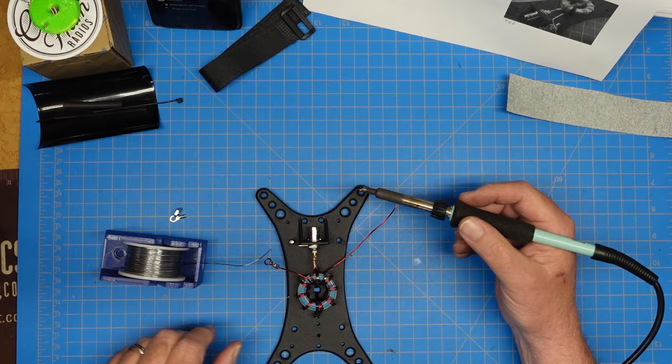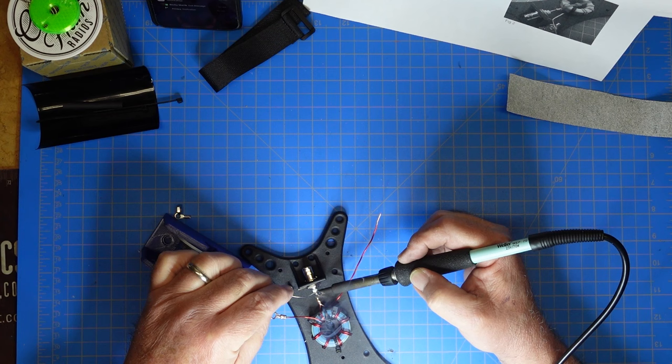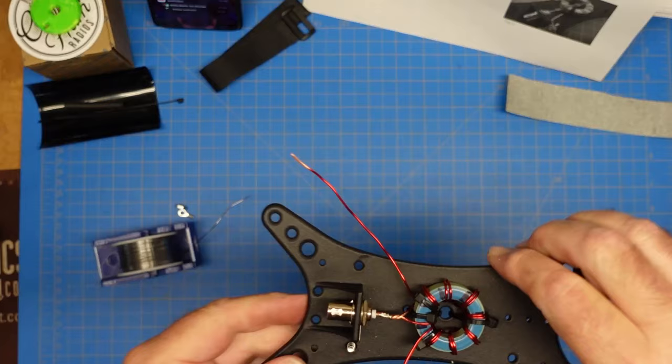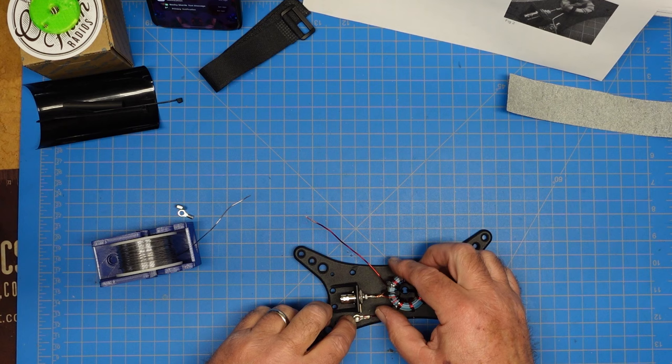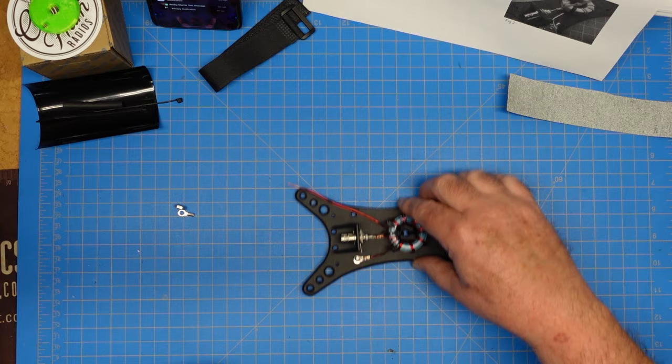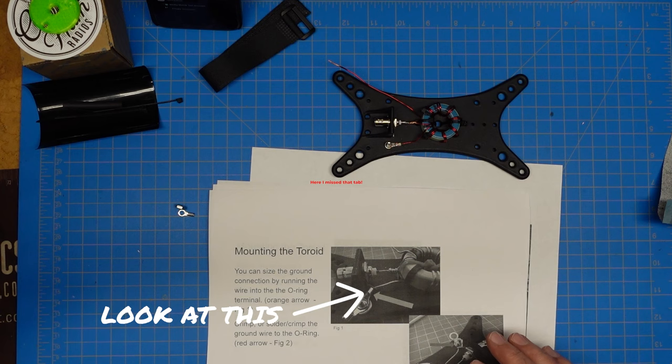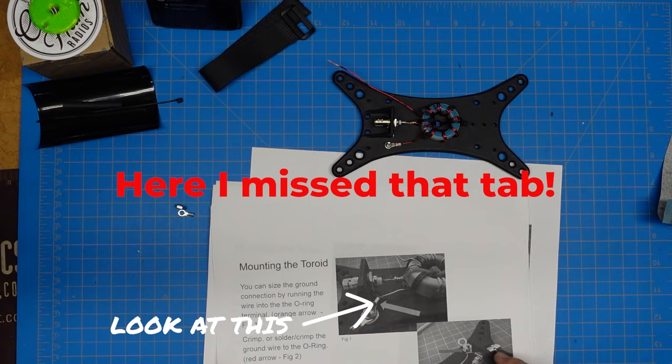Our toroid is fastened in place. We could put a couple more zip ties through it if we wanted, but two is sufficient. Let's put on our connector for our ground lug, get some crimpers and crimp that down. I'm going to come back and solder these because I don't trust crimps.